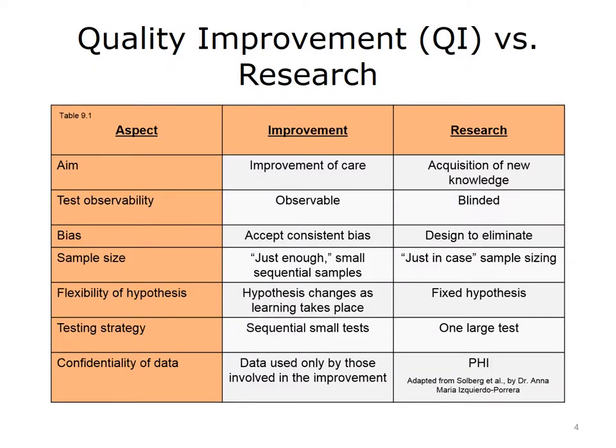It is important that a clear distinction is made regarding the use of data. When data are collected to improve care, the collection characteristics are different than when it is collected to advance research and expand our knowledge. When the aim of the data collection is to improve care, you use observable data. Accept that there is a consistent bias and collect just enough data to make a decision regarding the outcome of a test in a small and sequential manner.